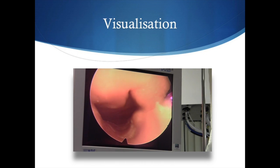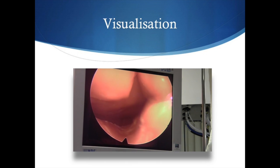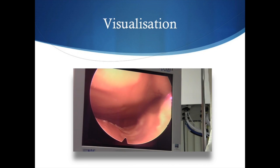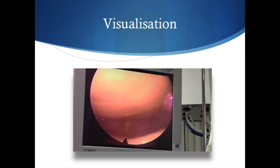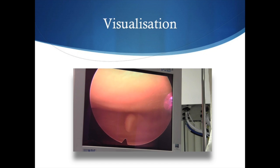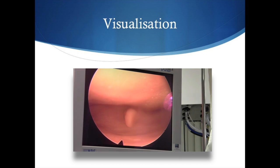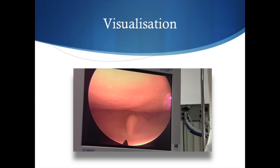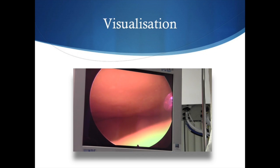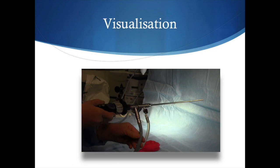The hysteroscope is inserted into the external os and advanced slowly into the uterine cavity. Once in the uterine cavity, we can assess the endometrium, and by rotating the light source to the left and to the right, we can visualise the tubal ostia.